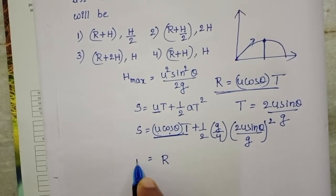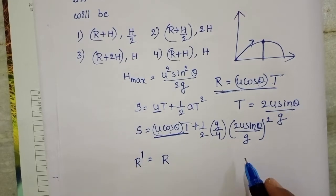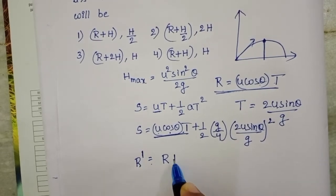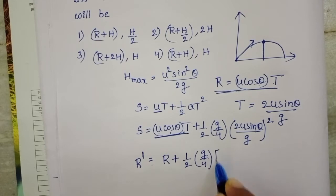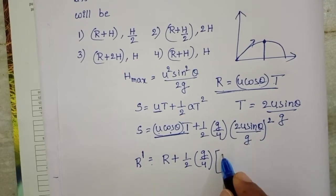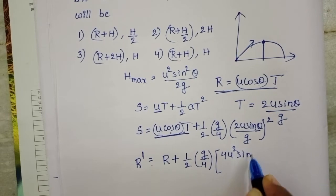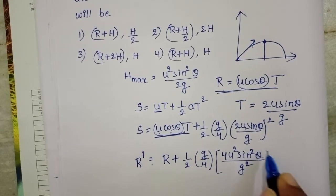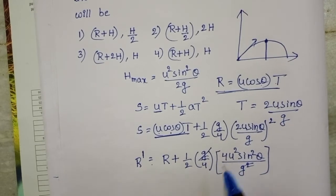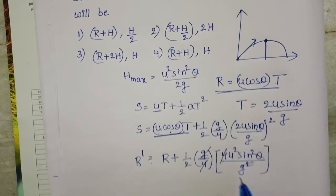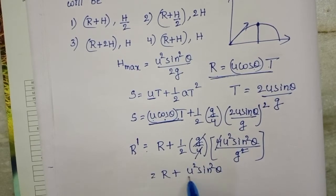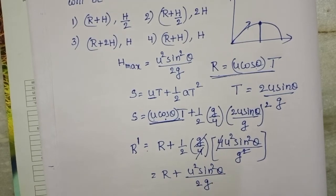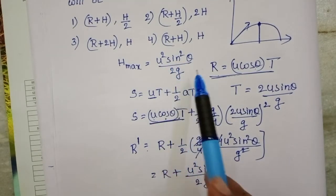Taking S as the final range R', we get: R' = R + ½ × (g/4) × (4u² sin²θ / g²). Here, one g cancels and the 4 also cancels, giving R + u² sin²θ / 2g. We know the maximum height formula: H = u² sin²θ / 2g.